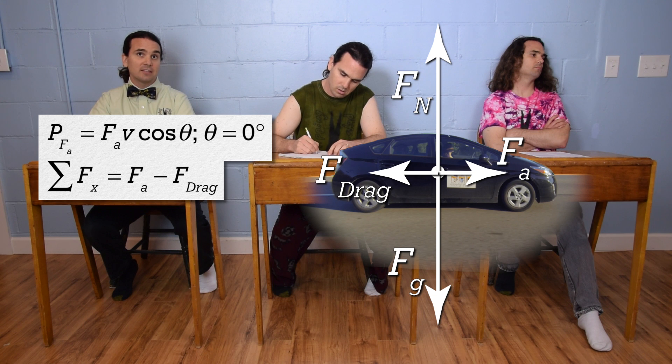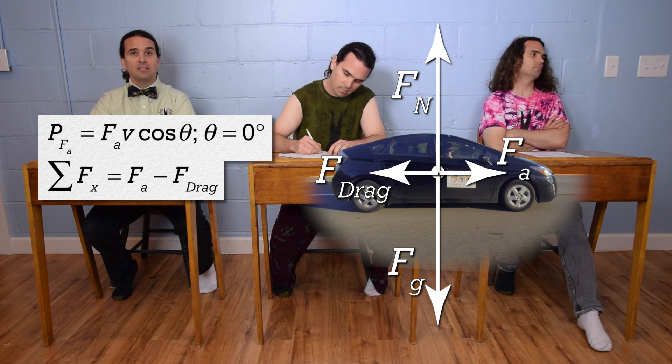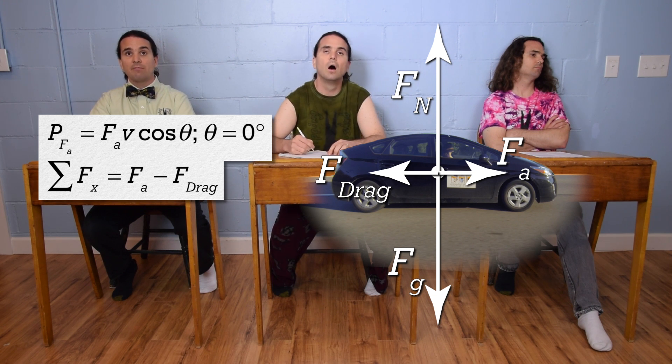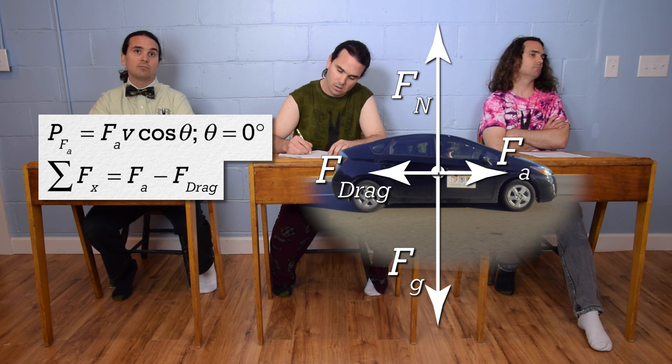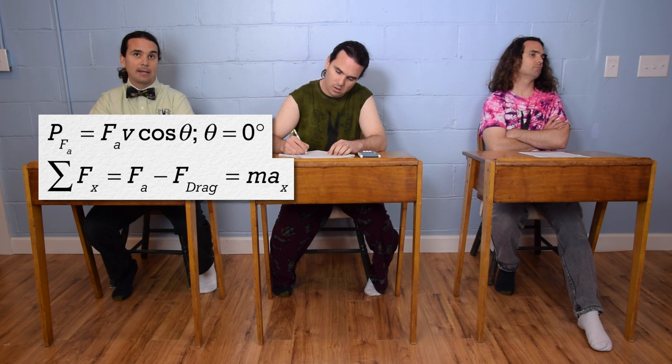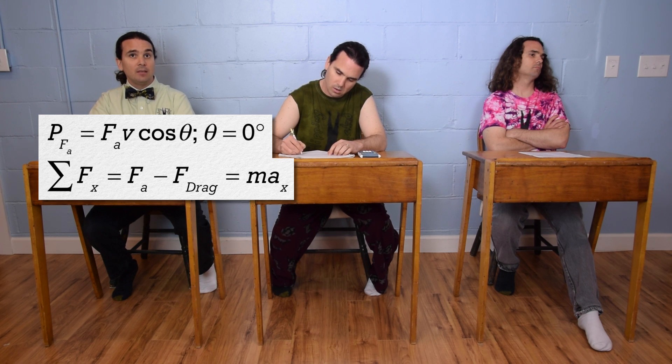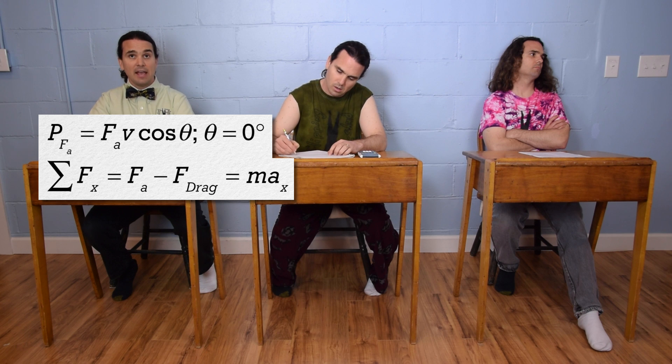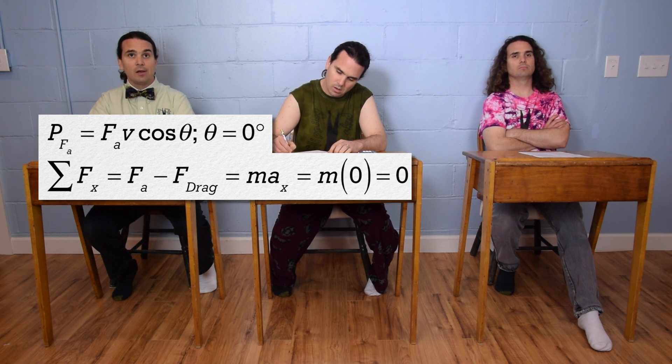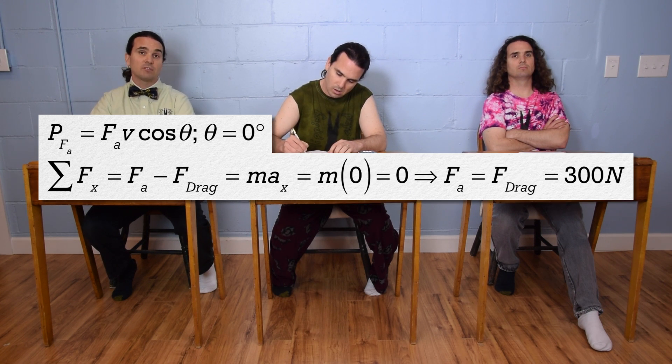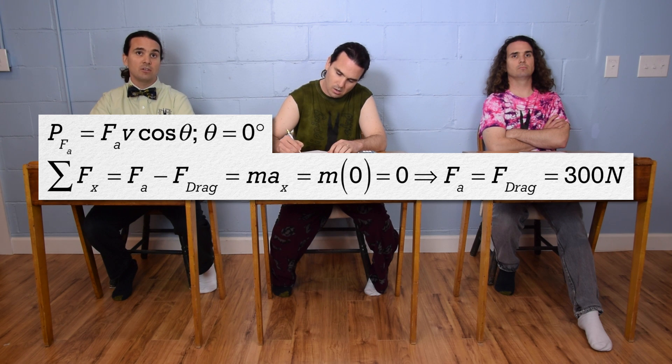The net force in the x direction equals force applied minus force of drag, and the net force in the x direction also equals the mass of the car times the acceleration of the car in the x direction. The car is moving at a constant velocity in the x direction, so the acceleration in the x direction is zero. Therefore the force applied equals the force of drag, which is 300 newtons.